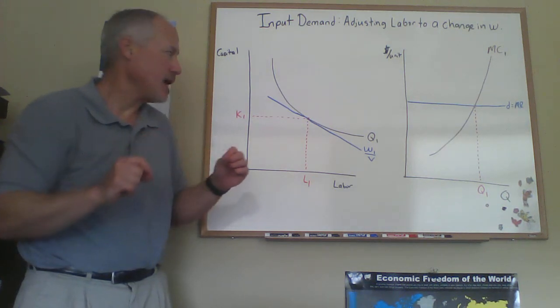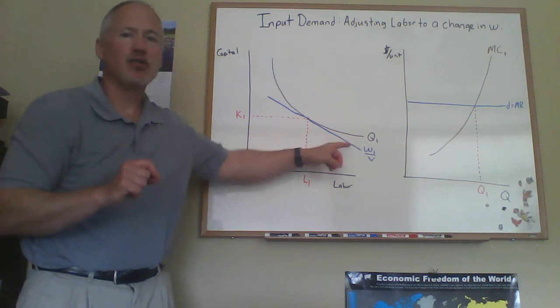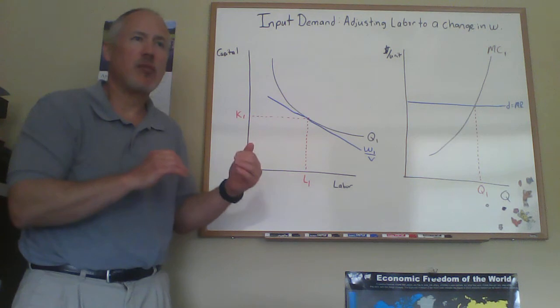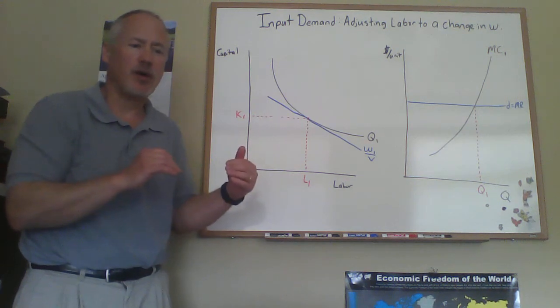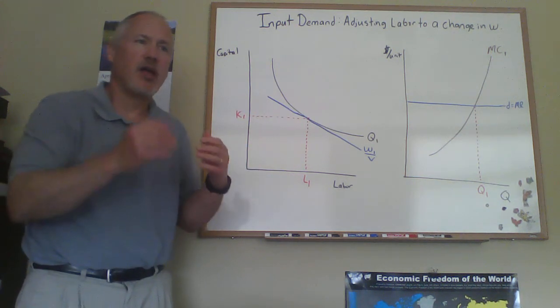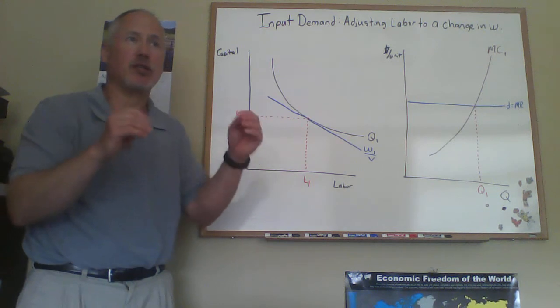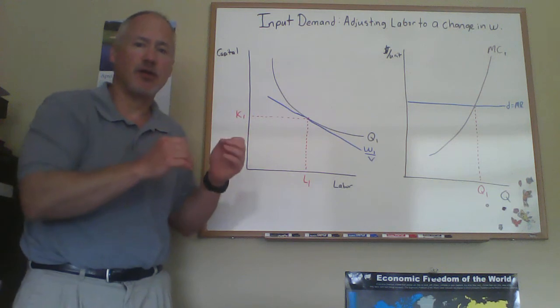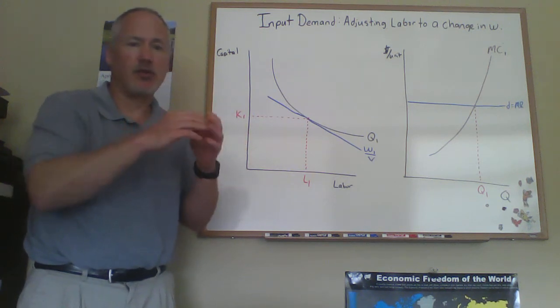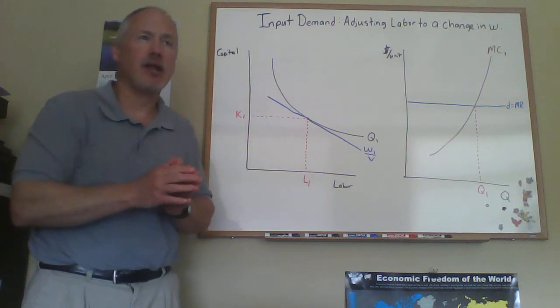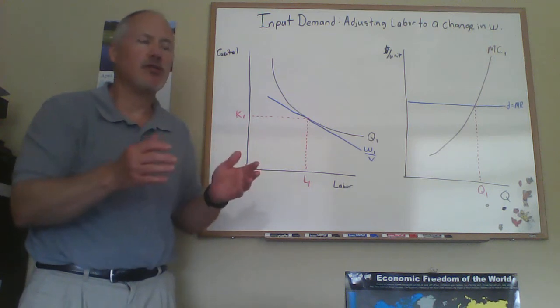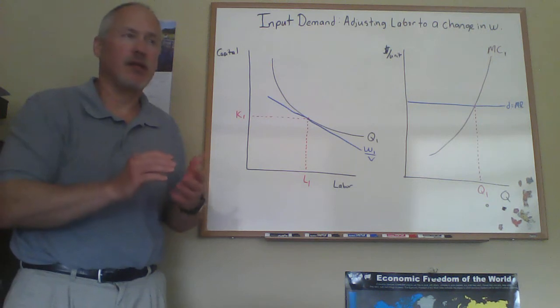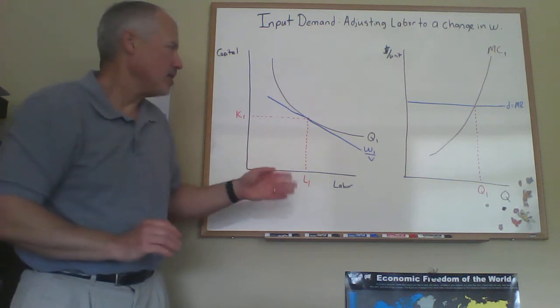If we wanted to derive the demand for labor that a firm would have, we would go through this type of exercise to show several different wages and how much labor the firm would want to hire at those different levels. We could then take that information, and that would be this firm's labor demand curve. You'd be summing up those labor demand curves for each of the firms in the labor market, and then we could do supply and demand in the labor market.